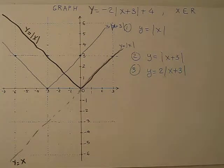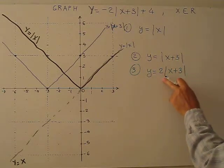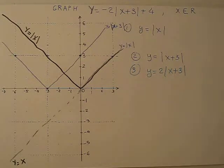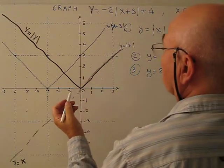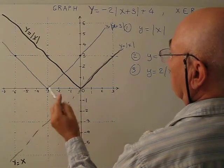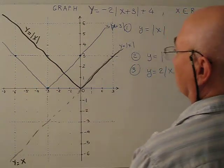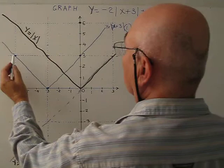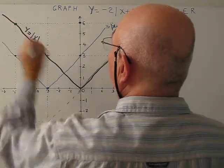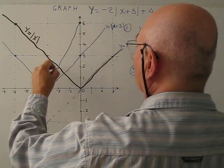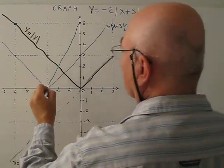Step 3: expand or stretch the graph vertically by a factor of 2, giving Y equals 2 times absolute value of X plus 3. We don't change the X coordinates — we only change the Y coordinates by multiplying by 2. The vertex at (negative 3, 0) doesn't move; the point with Y coordinate 3 becomes 6. This is the green graph.